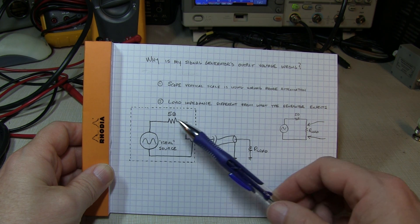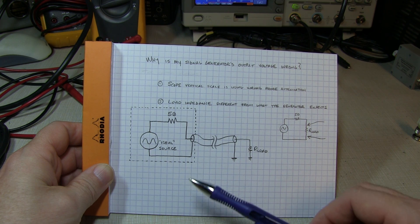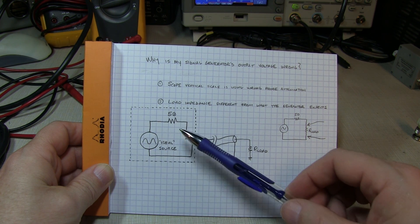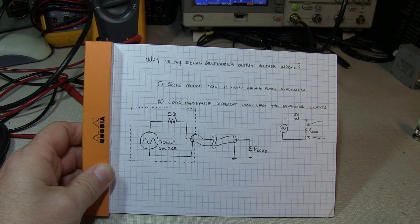Which means that it kind of looks like an ideal source followed by a 50 ohm resistor. And generally when you're setting the amplitude, the generator's making the assumption that you're loading it with a 50 ohm load.